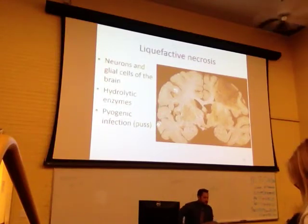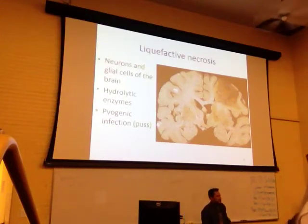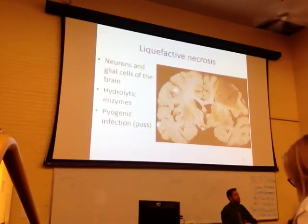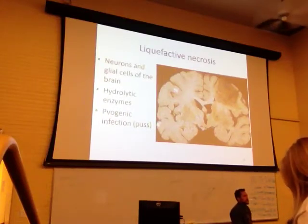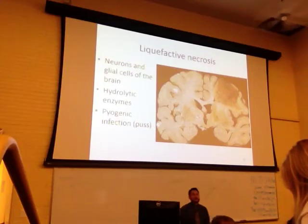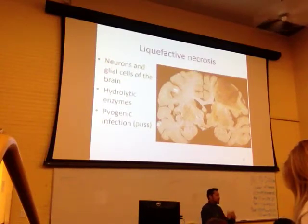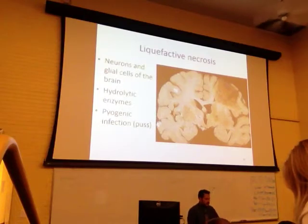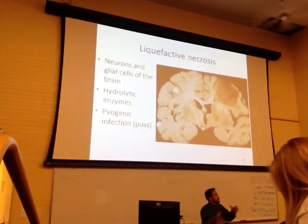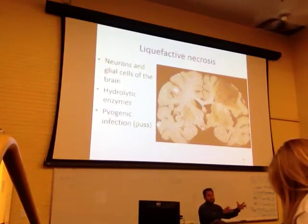You also see liquefactive necrosis with a pyogenic bacterial infection — that bacterial infection is what makes pus. Another circumstance where you'd see liquefactive necrosis in non-neural tissue is a pyogenic bacterial infection. The pus forms because of the hydrolytic enzymes released from leukocytes recruited to the area to try to kill off the bacteria.